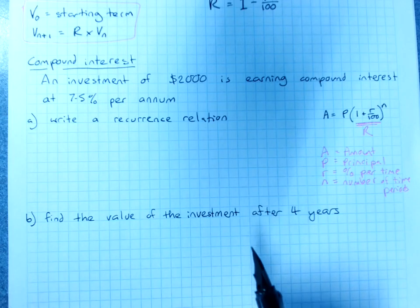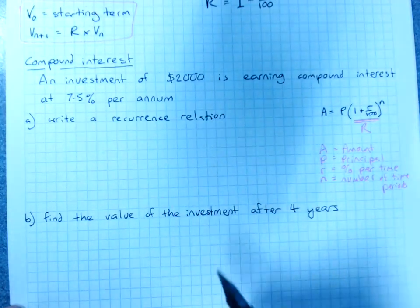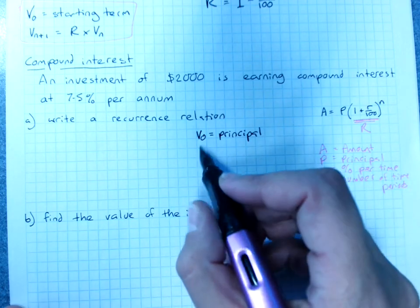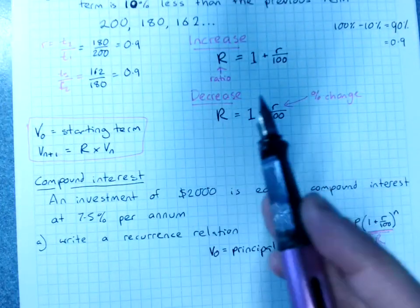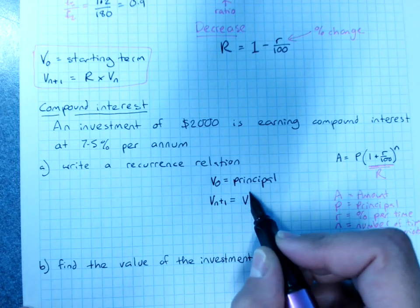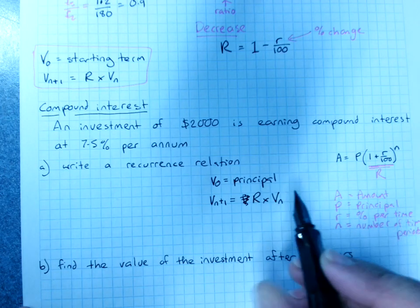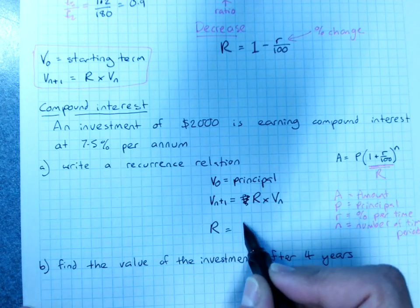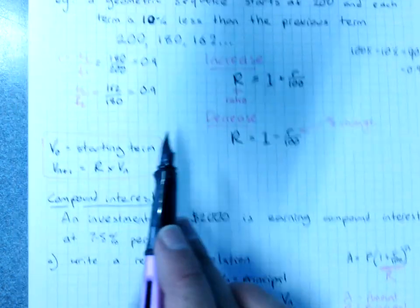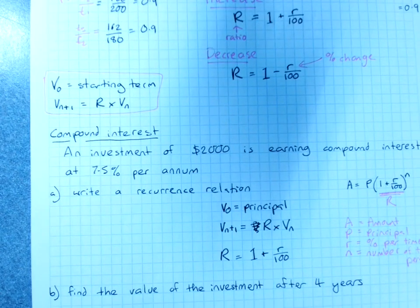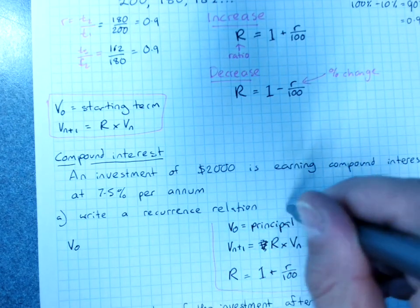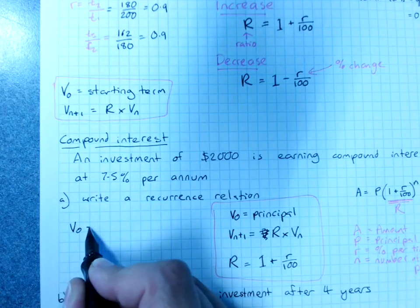A recurrence relationship, though, we'll need to have a rule for that. V0 is our starting amount, so that's our principal. And this exact formula here, because compound interest is just percentage change. Vn+1 is V or R times Vn. And R, our ratio, our common ratio, is 1 plus the interest rate over 100. It's exactly the same as percentage increase or decrease. Compound interest is percentage increase. So a recurrence relationship for this. I'll put this in a little pink box so you can see that that's my important bit for compound interest. V0 is our principal of $2,000.